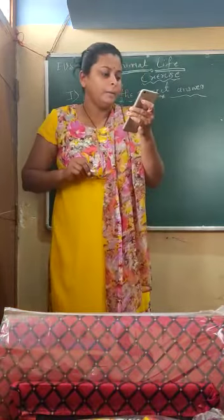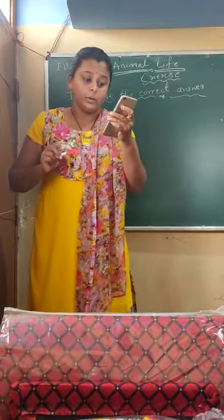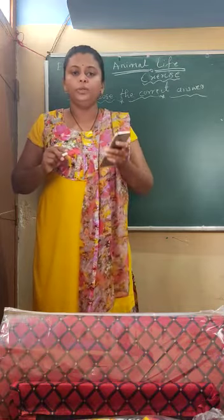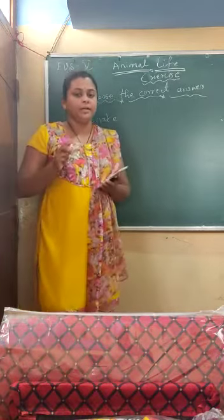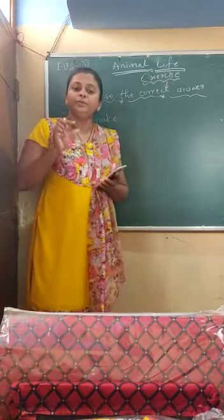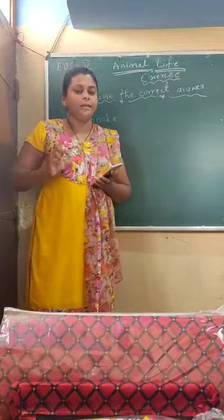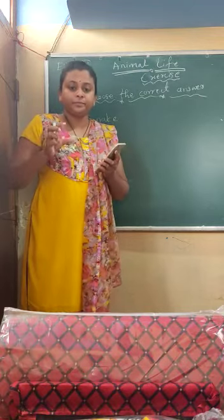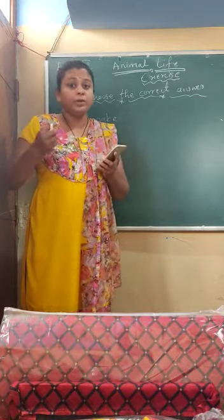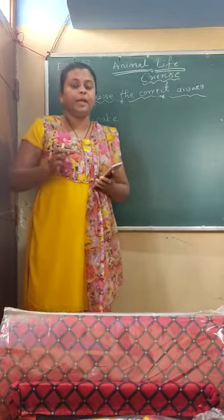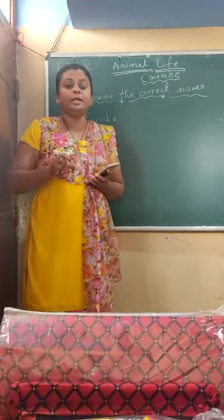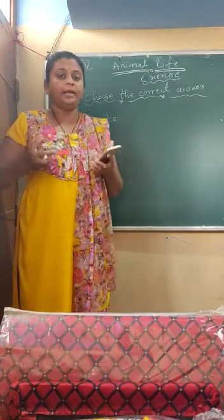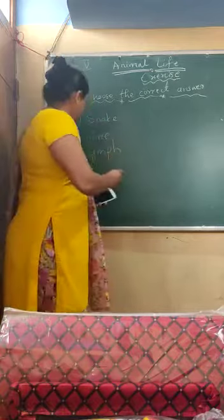The part of the bird egg that provides food to the growing baby is: albumin, shell, cocoon, or yolk. When we discussed the structure of the egg, albumin acts like a jelly structure that protects the baby and provides some nutrients. The yolk is the material which acts as the main food source for the baby. So the answer is yolk.